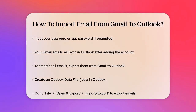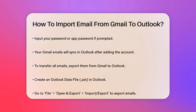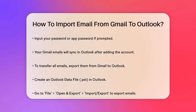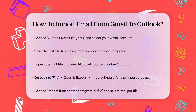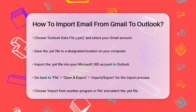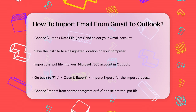To export your Gmail emails, you'll create an Outlook Data File (.pst). In Outlook, go to File, Open and Export, Import/Export, and select Export to a File. Choose Outlook Data File (.pst) and select your Gmail account, making sure to include subfolders. Save the .pst file to a location on your computer.